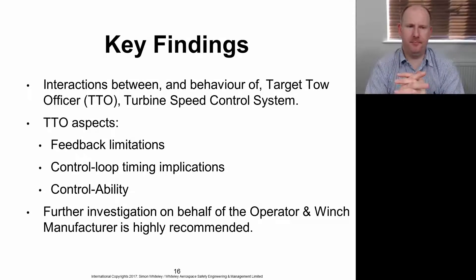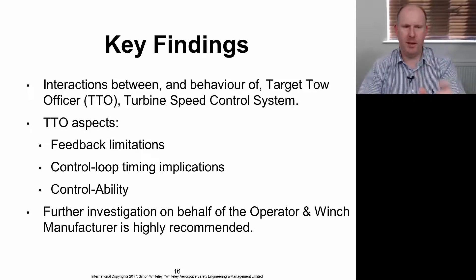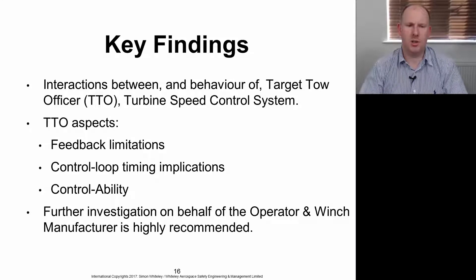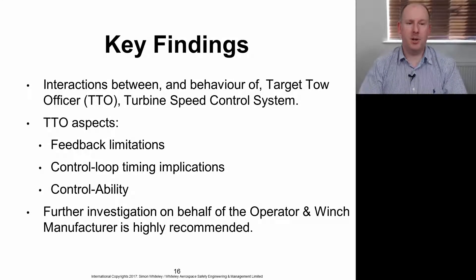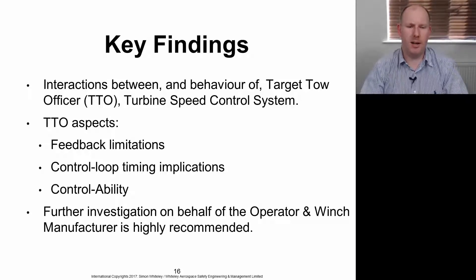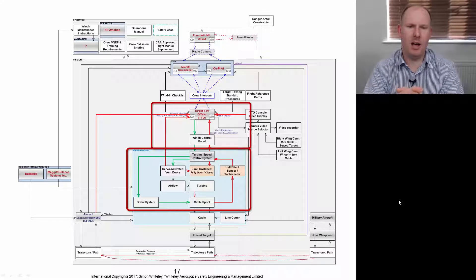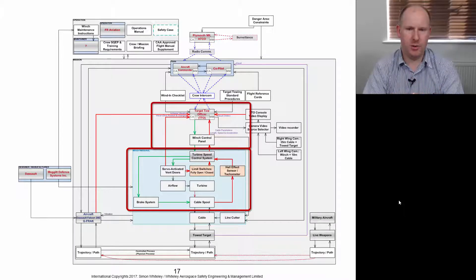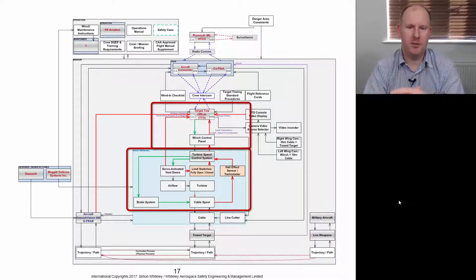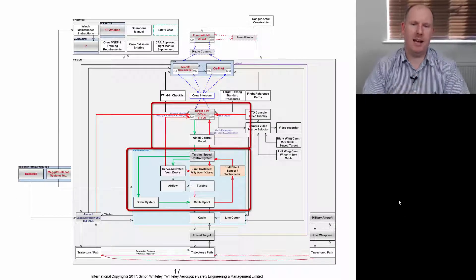Now, there are a few key findings. The interactions between and behavior of the target tow officer and the turbine speed control system are not really dealt with by the recommendations in the detail that they really should. There are aspects associated with the TTO, such as feedback limitations, control loop timing implications, and control ability. Personally, I recommend further investigation is done on behalf of the operator and the winch manufacturer, and it should focus on these three aspects. The green arrows I've highlighted—these are the controllability of the target tow officer, the turbine speed control system—and then the red arrows highlight the feedback from the control process, the cable spool, up through the various sensors to the turbine speed control system and then back to the target tow officer.